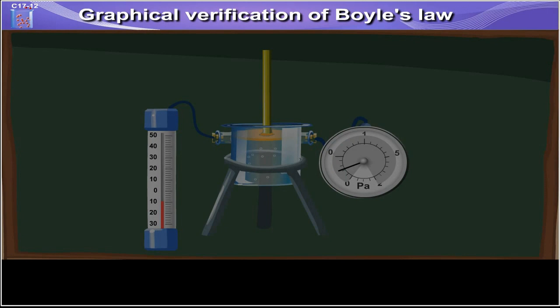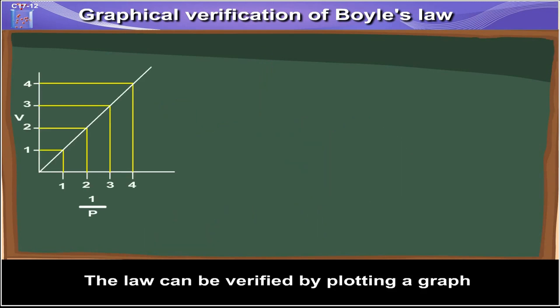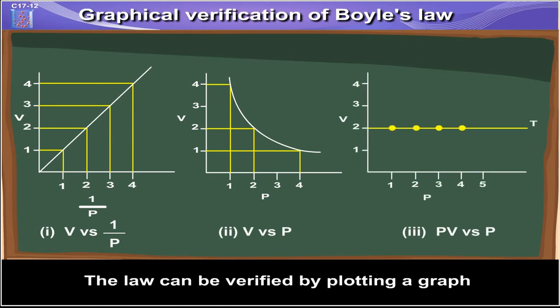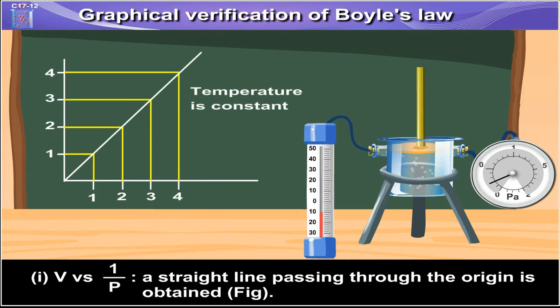Graphical Representation of Boyle's Law. The law can be verified by plotting a graph. First, V vs. 1 upon P: a straight line passing through the origin is obtained, as seen in the figure.